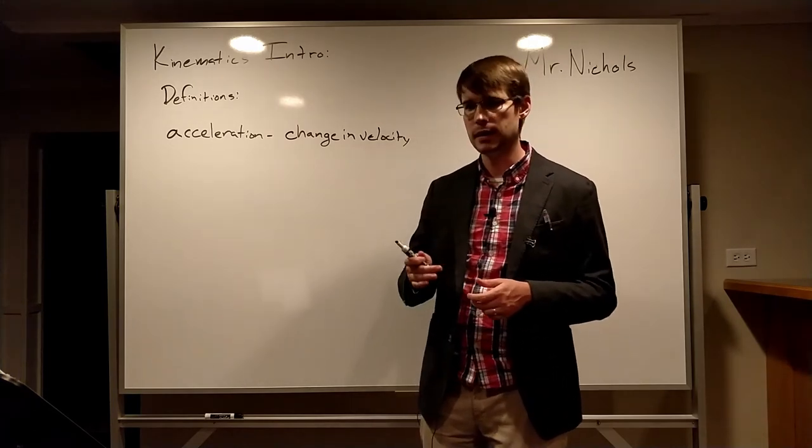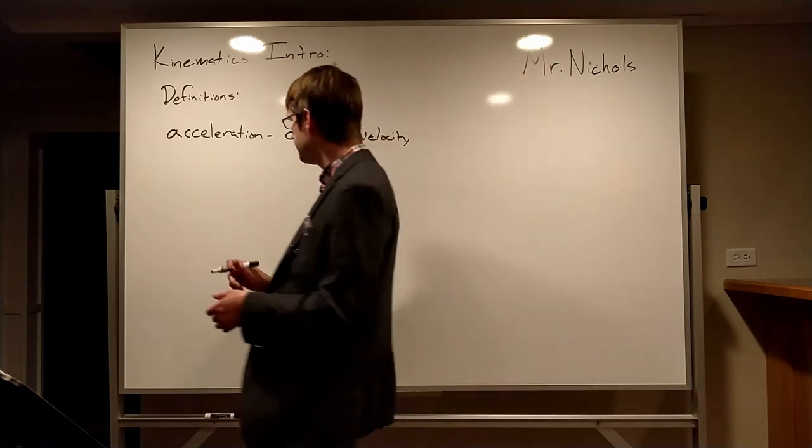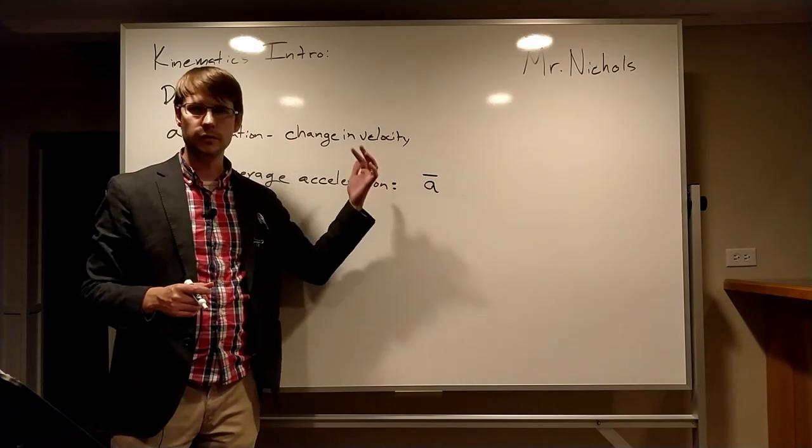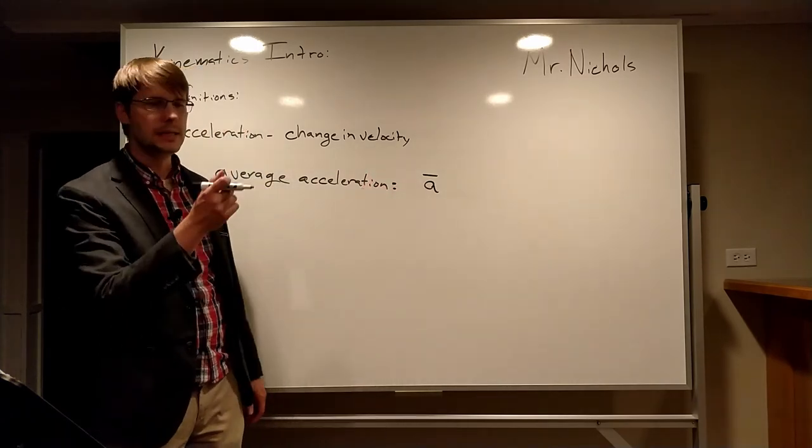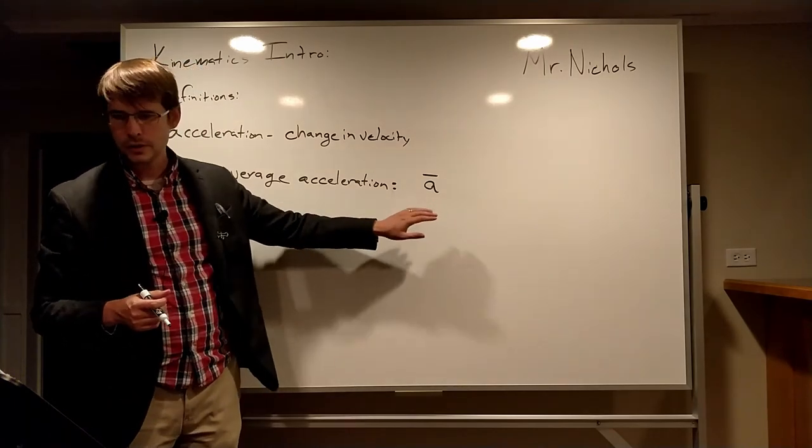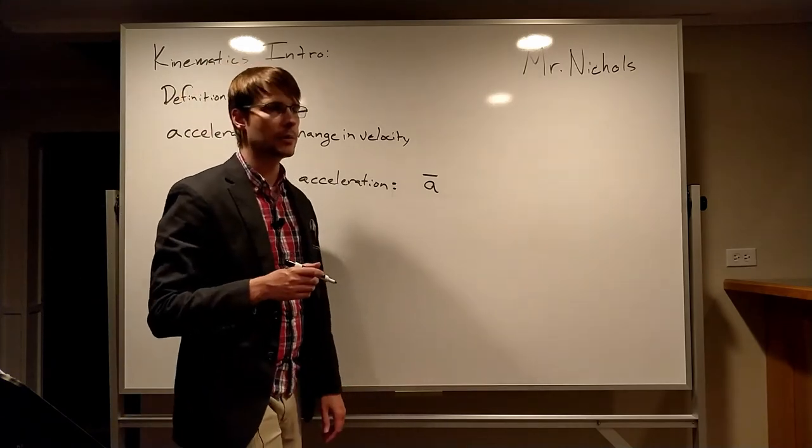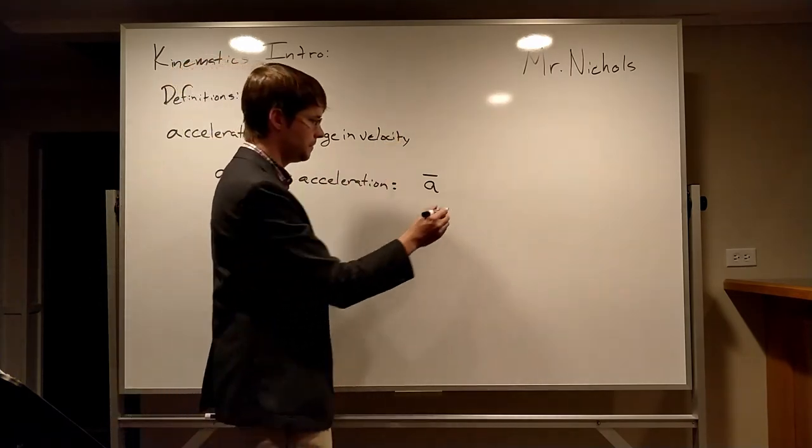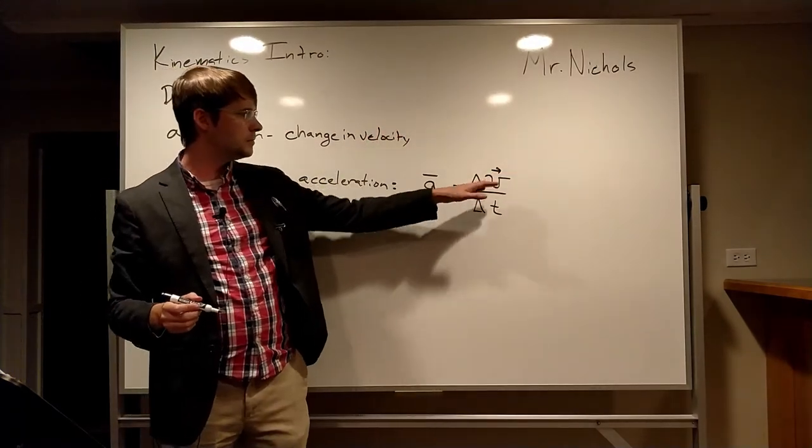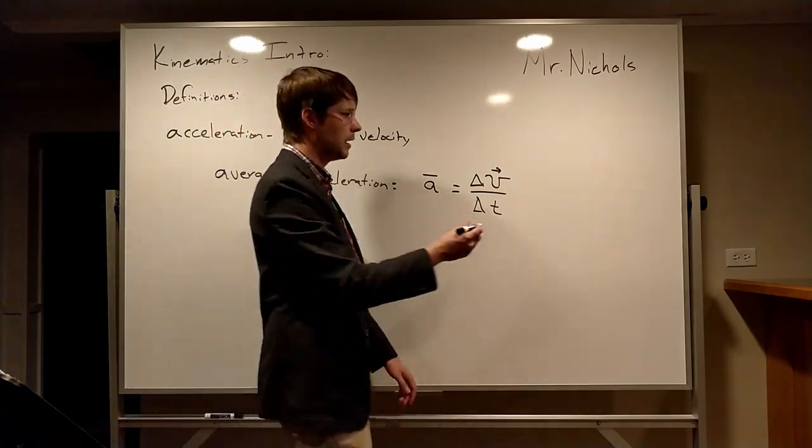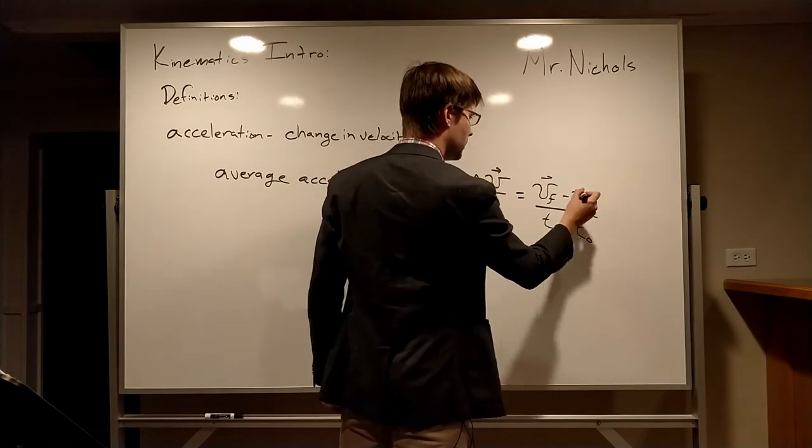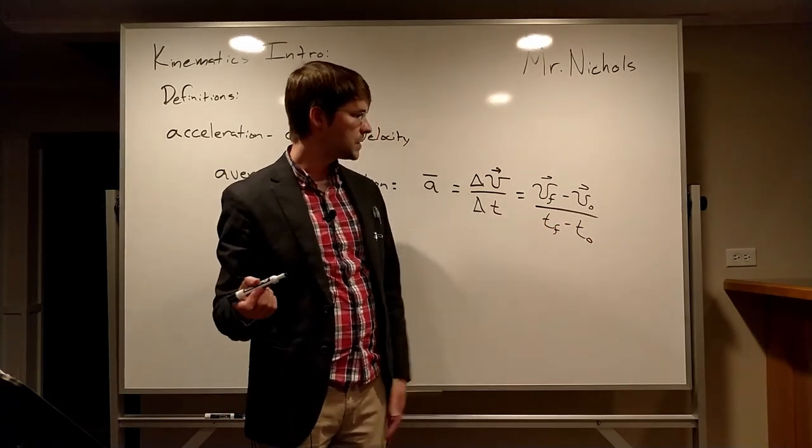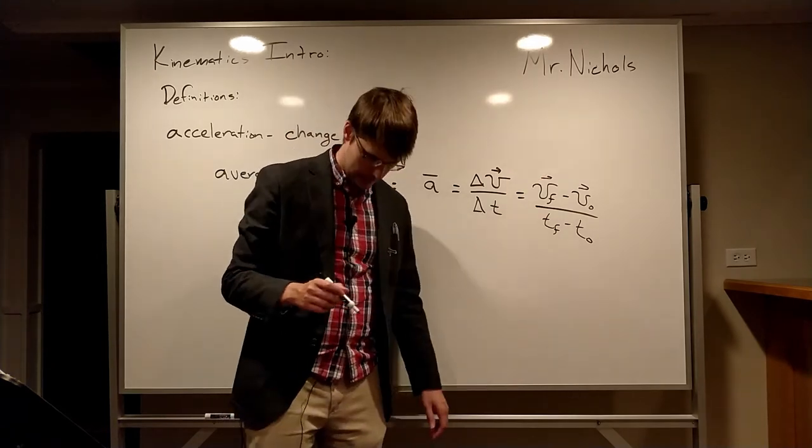All right, so here we've got an average acceleration, sometimes written as a with a bar over it for average. This is a kind of standard notation, but it could also be written with that ave after it or avg after it for average. And so to calculate the average acceleration, we're going to look at the same sort of calculation we did before. We're looking at the change in velocity divided by the change in time. How much the velocity changes in a certain amount of time. So it's going to be delta v, change in velocity, over the change in time. If you wanted to write that out a little more, it's going to be the final velocity minus the initial velocity divided by the final time minus the initial time. Often this is zero, so it would just be divided by the time elapsed.